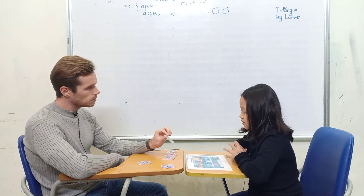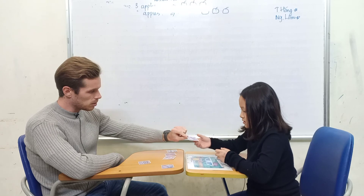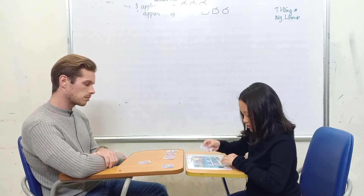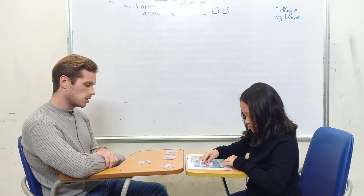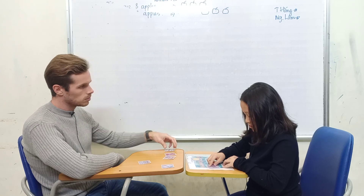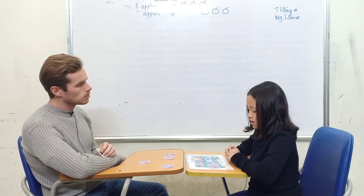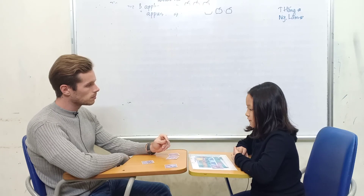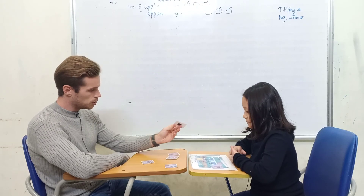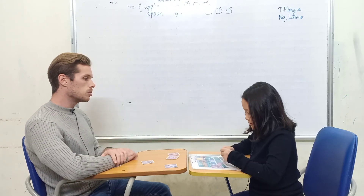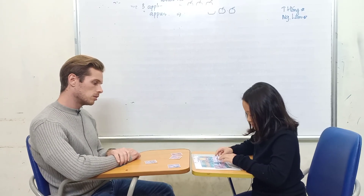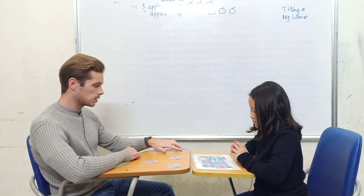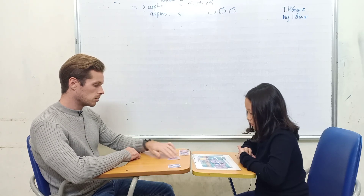What's this? Mouse. Could you put the mouse under the tree? Where is the mouse? The mouse under the tree. What's this? A fish. Could you put the fish in the pool? Where is the fish? The fish in the pool.